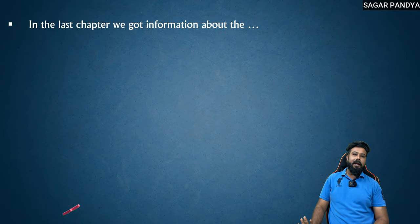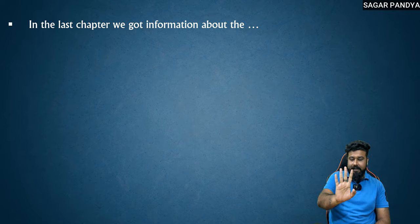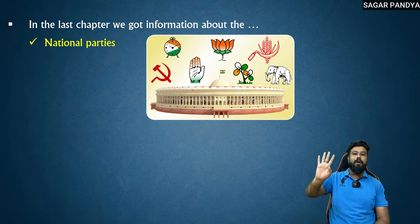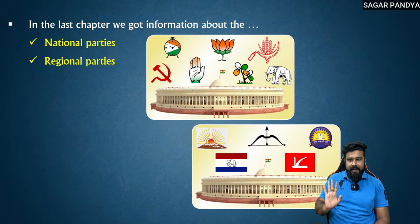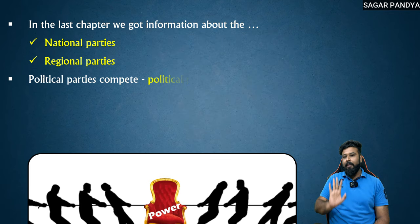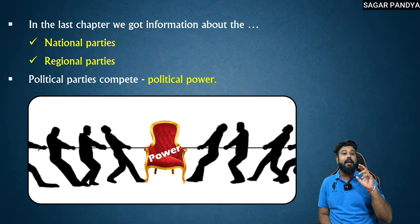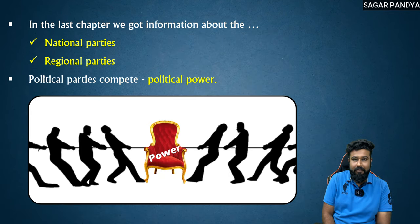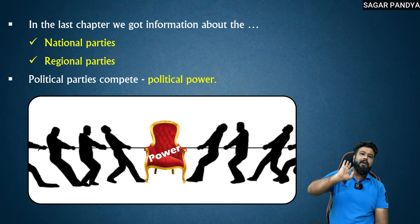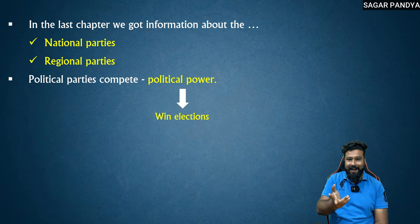So in the last chapter, what did we study? The third chapter is Political Science — Political Parties. We studied about national parties, regional parties, and political parties. At the end of the day, what did we get? Election jeet gaye, bhai.